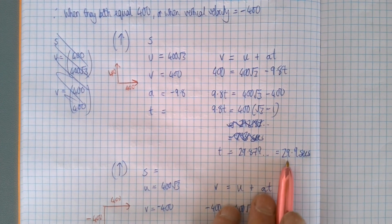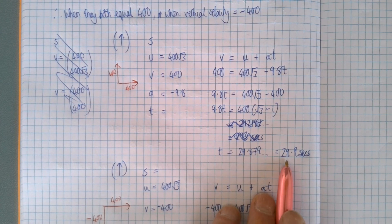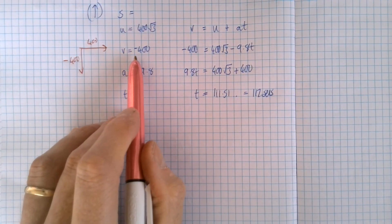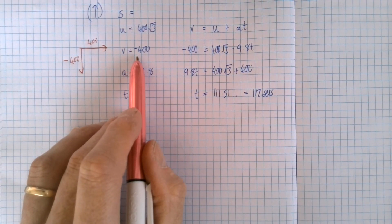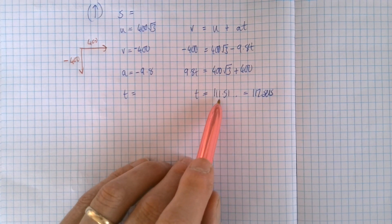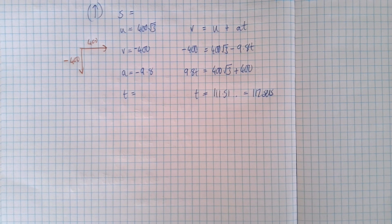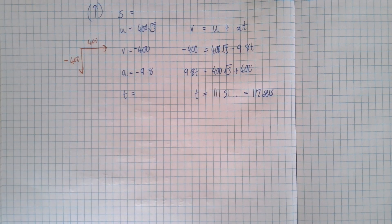So you get the point on the way up when it is traveling at 45 degrees. And then doing exactly the same but just asking when v is minus 400, you get the point on the way down when you'll be traveling at 45 degrees. Hope that's okay, take care.